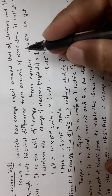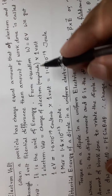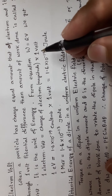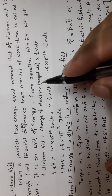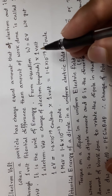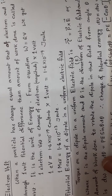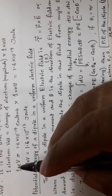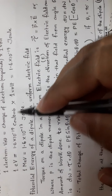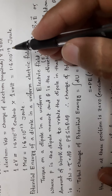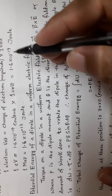When we write 1 electron volt, the charge of electron is its magnitude, and the potential difference is 1 volt because 1 volt is the potential difference through which the electron moves. So 1 electron volt equals 1.6 into 10 to the power minus 19 coulomb, which is the charge of 1 electron, into 1 volt.